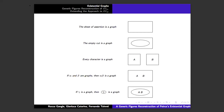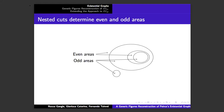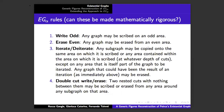That bottom graph would represent the claim 'not A and B.' By nesting these cuts, we divide the sheet into even and odd areas, and the sheet of assertion itself is considered even. This allows us to formulate two of the inference rules — think of these as rules that allow you to transform a given graph, permissions to either write or erase that correspond to valid logical inferences. These are written in ordinary language, and one of the tasks we'd like to tackle is making them mathematically precise and perspicuous.